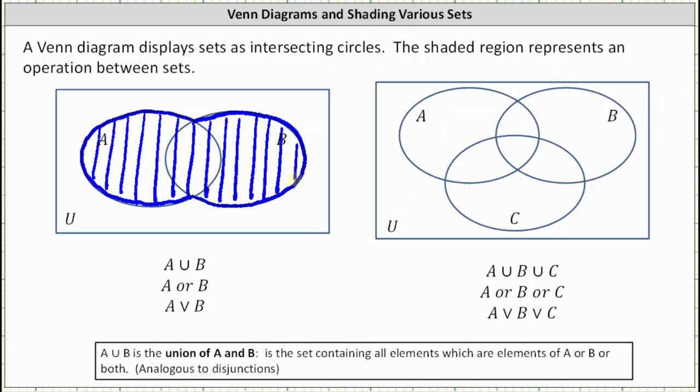On the right, we have A union B union C, which can also be read as A or B or C.